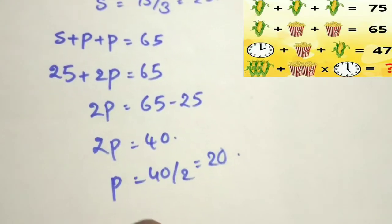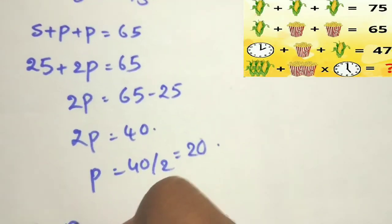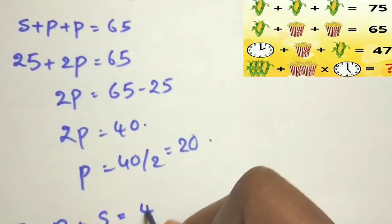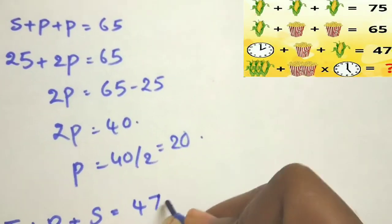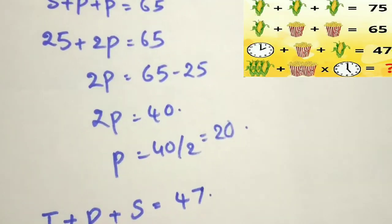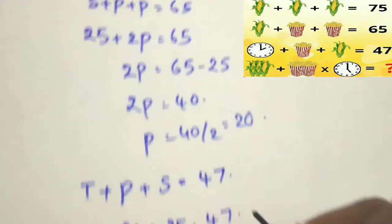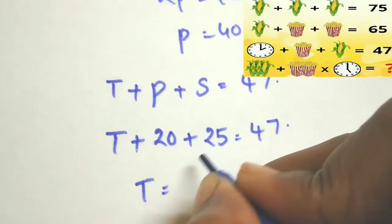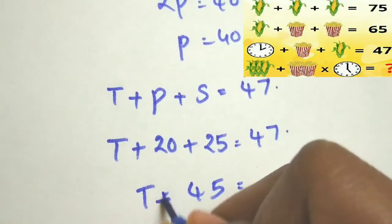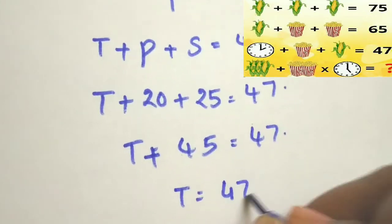That means T plus popcorn plus one sweet corn is equal to 47 they given. Substitute the values: time plus popcorn value is 20, sweet corn value is 25, is equal to 47. T plus 20 plus 25, 45 is equal to 47.